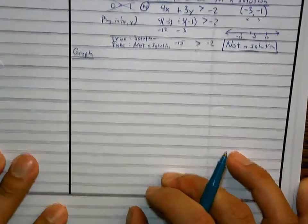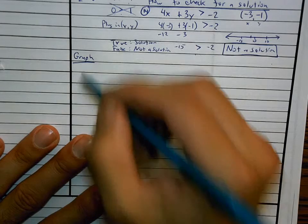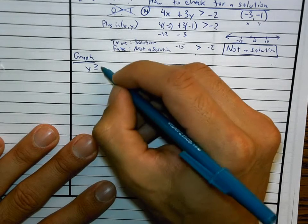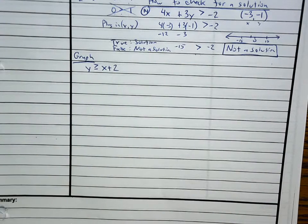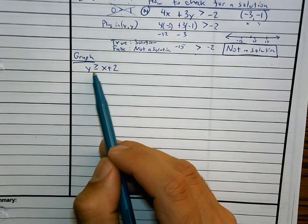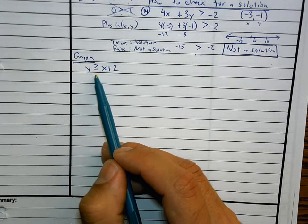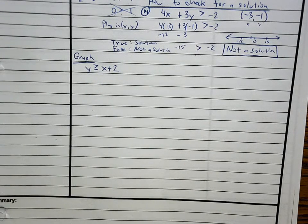I want to graph y is greater than or equal to x plus 2. This is going to be similar to number three on your worksheet, which says negative x plus y is greater than or equal to 2.